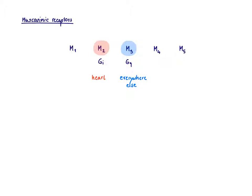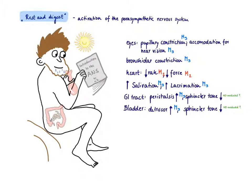M2 is a Gi-coupled receptor and M3 is a Gq-coupled receptor. So as we know that all the effects are mediated by M2 and M3, we can now predict which responses are mediated by which receptors.